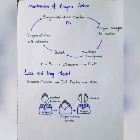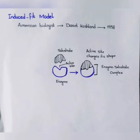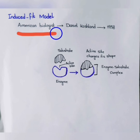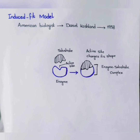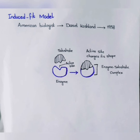Now we are going to discuss another model for the mechanism of enzyme action — that is the induced fit model. This model was given by American biologist Daniel Koshland in 1958. According to this model, the active site — where the substrate attaches — is not a rigid structure, unlike in the lock and key model where the active site was considered a rigid, specific shape.